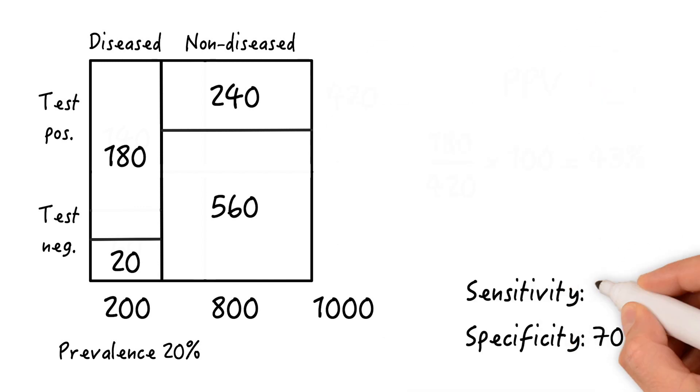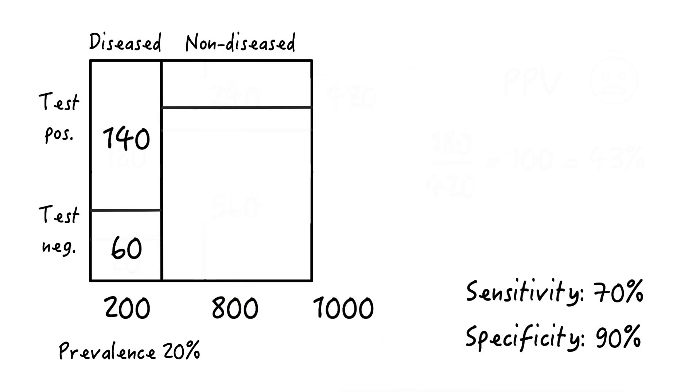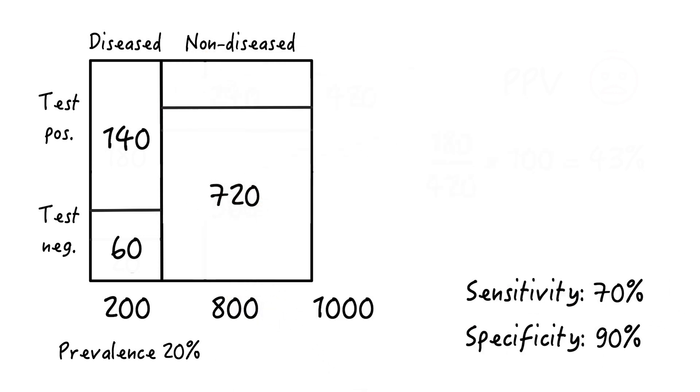Now, let's see what happens if we take our initial numbers and change the specificity from 70 to 90%. So in this case, the left side stays the same since sensitivity is left unchanged at our initial 70%. Now we're correctly diagnosing 90% of non-diseased, or 720 people, and we're going to get 80 false positives.